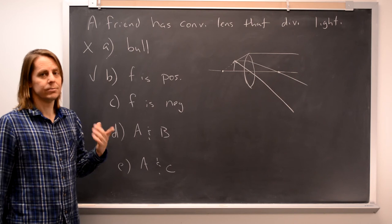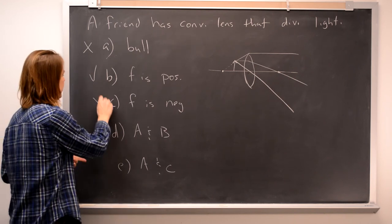Could F be negative? No, because that's the definition of a diverging lens. So that can't be true.